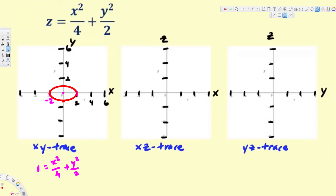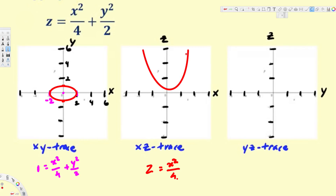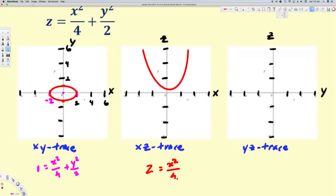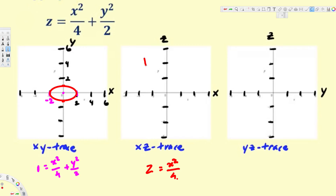Now let's draw the XZ trace. For the XZ trace, we equate y equal to zero, so we get z equals x squared over four. This is an equation for a parabola, so we are going to have a parabola going through the origin.